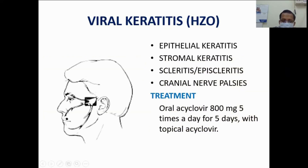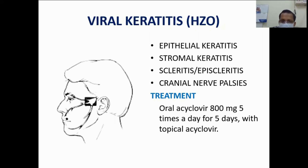In herpes zoster ophthalmicus, similar to herpes simplex, it can be epithelial keratitis, stromal keratitis, scleritis, episcleritis, or multiple cranial nerve palsies depending on where the virus is affecting. Treatment requires oral antiviral agents: oral acyclovir 800 mg five times a day for five days, with or without topical acyclovir. If the cornea is not affected, lubricants can be prescribed.